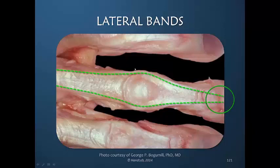The lateral bands must go around the PIP joint and come back together before they insert together. Therefore, any tension in the lateral band is not effective to its maximum at the PIP joint, because for maximum extension the lateral bands would need to be more central at that joint for maximum mechanical efficiency.